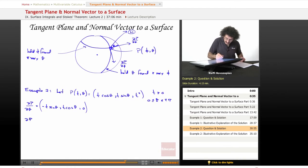And let's go ahead and take dp/dt. That's going to equal cosine theta, sine theta, and 2t.